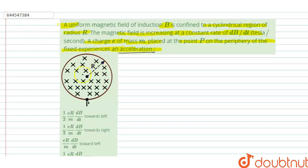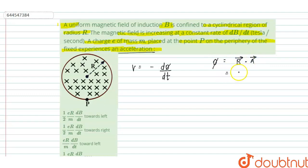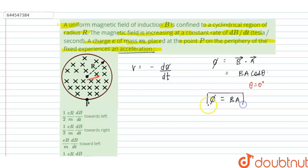Due to the change in the magnetic field, the EMF induced is equal to V. V can be written as minus of dΦ/dt — that is, the rate of change of flux. Flux can be written as the dot product of the magnetic field and area: Φ = B·A·cosθ, where θ is the angle between the area vector and the magnetic field. Since the magnetic field and area are in the same direction, θ = 0°, so Φ = B·A.